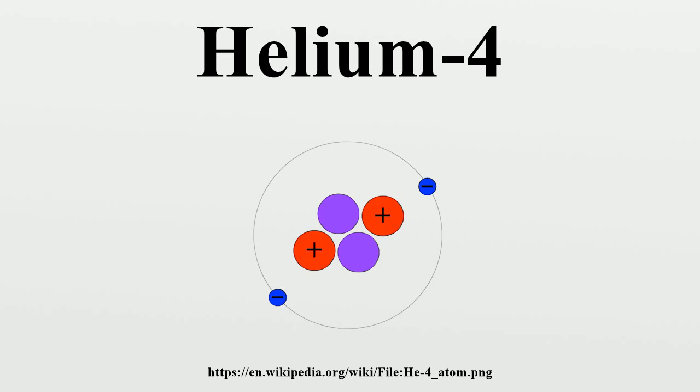All heavier elements, including those necessary for rocky planets like the Earth and for carbon-based or other life, have thus had to be produced since the Big Bang in stars which were hot enough to fuse not just hydrogen, but to fuse helium itself.